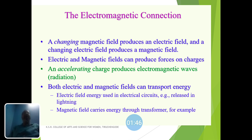The electromagnetic connections: a changing magnetic field produces an electric field, and a changing electric field produces a magnetic field. This is the connection between electricity and magnetism. Electric and magnetic fields can produce forces on charges, and an accelerating charge produces electromagnetic waves — that is, radiation.